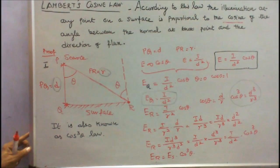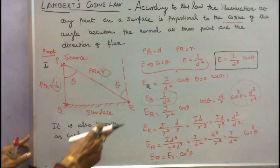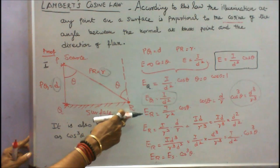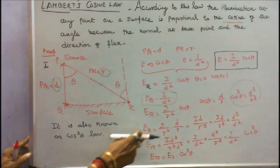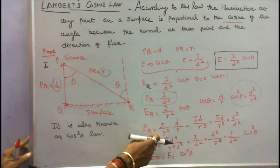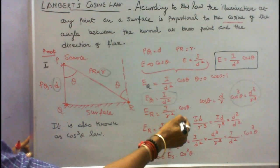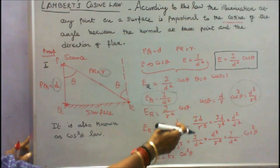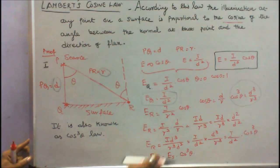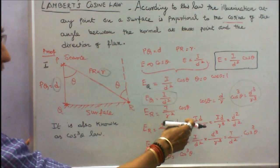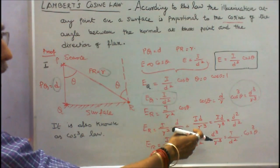Cos cube theta is equal to D cube by R cube. Therefore illumination at the point ER is equal to I divided by R square into cos theta. Instead of cos theta I write D by R. I multiply I into D, luminous intensity into D divided by R cube.